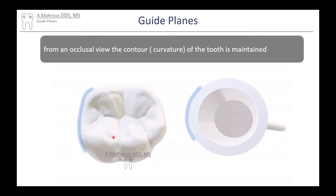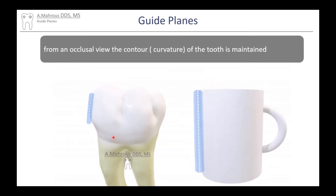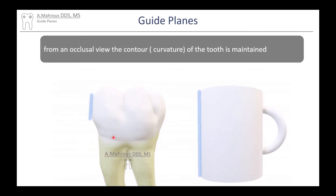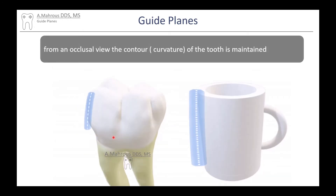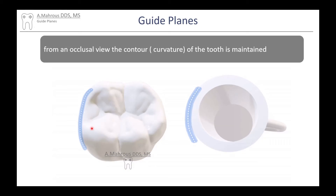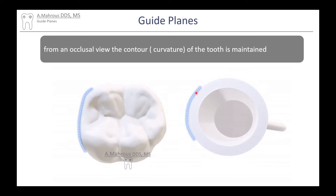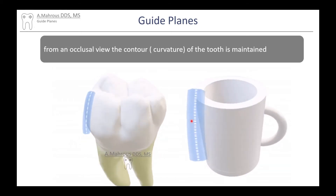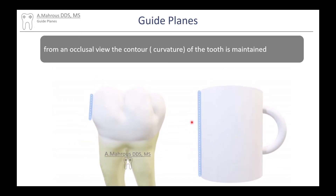From the occlusal view, the contour or curvature of the tooth is maintained. As you see here, just like a cup — from the top it's curved, but when you look at it from the side, it is straight.